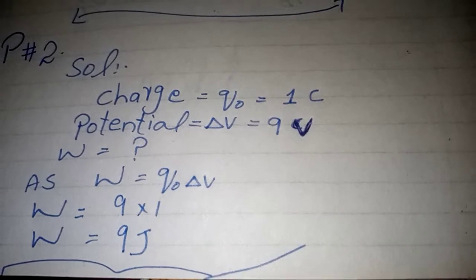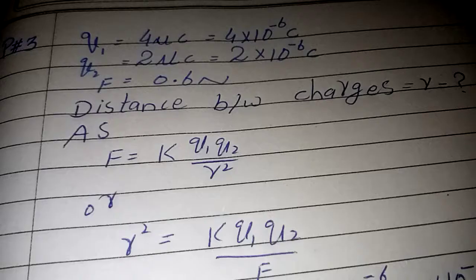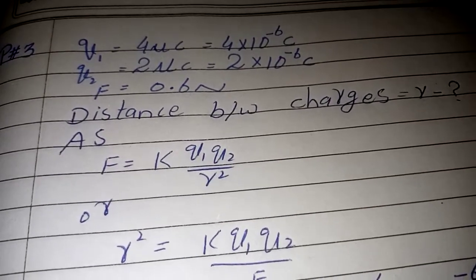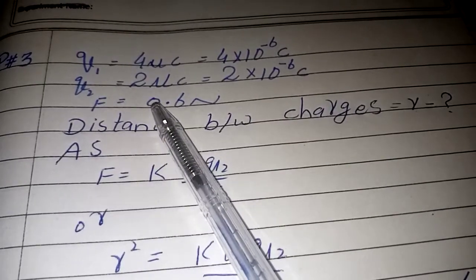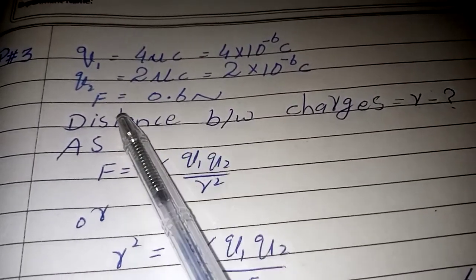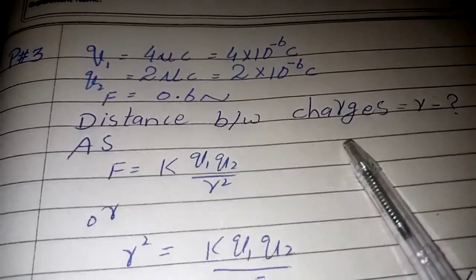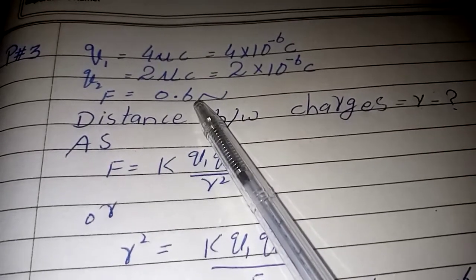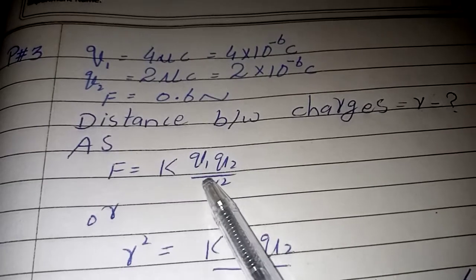Next, problem number three. Two charges of 4 micro coulombs and 2 micro coulombs are experiencing a force of 0.6 newtons. Find the distance between the charges. Given data, we have to apply Coulomb's law.